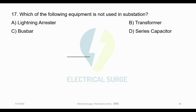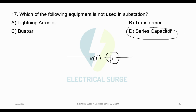In the transmission line, long-distance current is increased by inductive reactance. Capacitive reactance is compensated by a series capacitor. In the transmission line, long-distance high-voltage transmission uses a series capacitor.